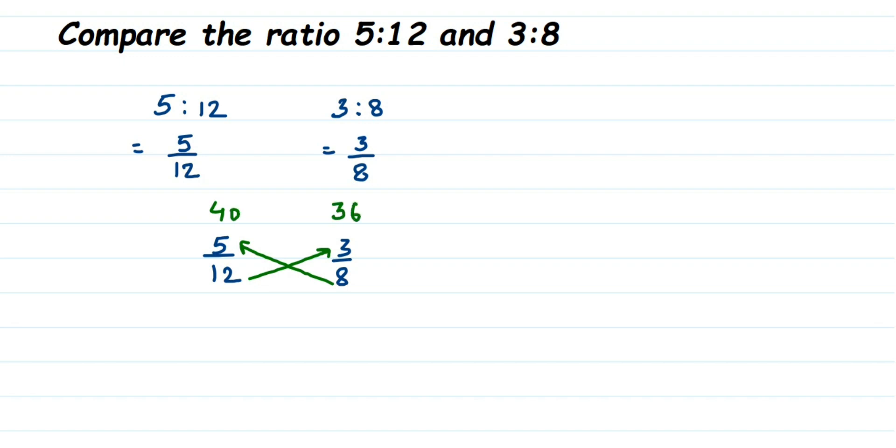Now see which number is greater: 40 is greater or 36 is greater? 40 is greater, right? Which means 5/12 is greater than 3/8. It's very simple. If you do the LCM method, you're gonna get the same answer. Which means 5:12, this ratio is greater than 3:8.